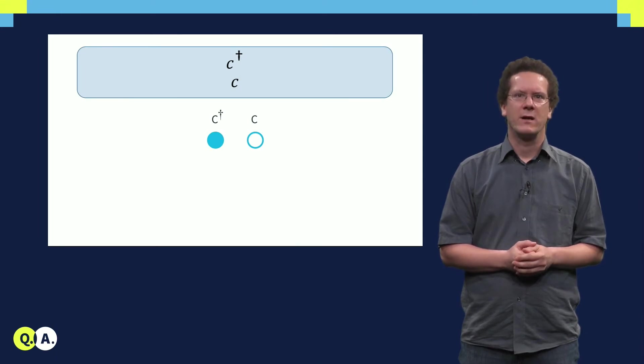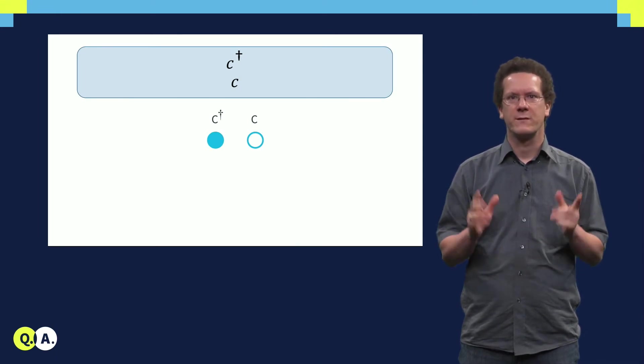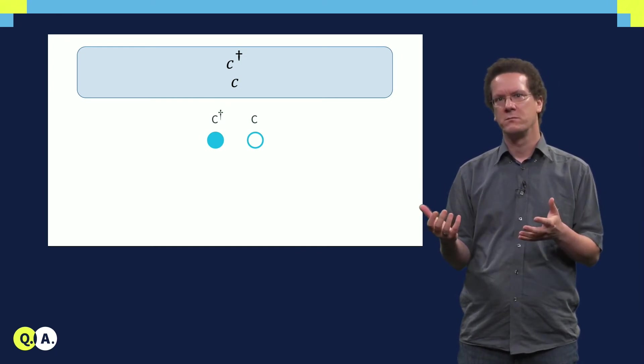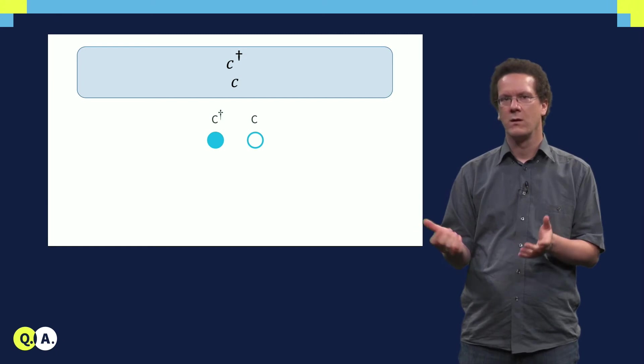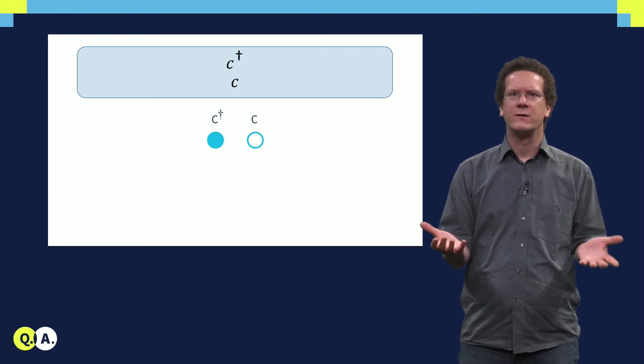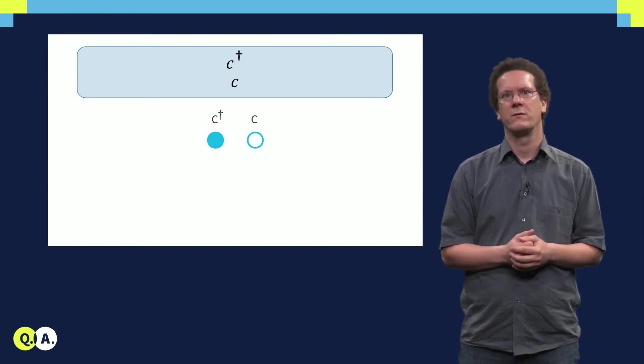To introduce Majorana-bound states, we can first do a simple mathematical trick. In condensed matter physics, a state can be filled, this is an electron, or it can be empty, in which case we have a hole. These are the equivalent of particle and antiparticle respectively.